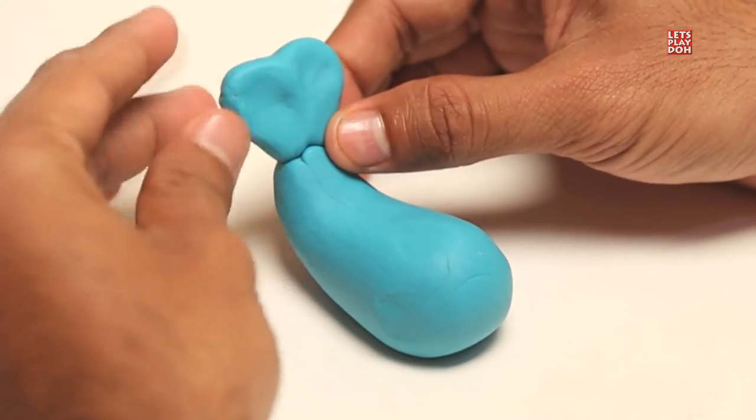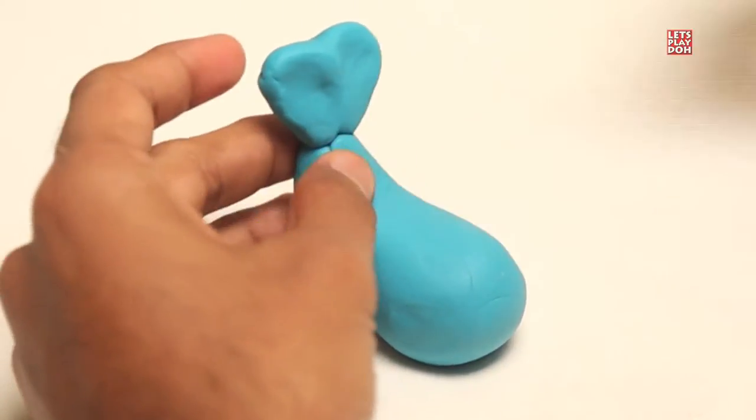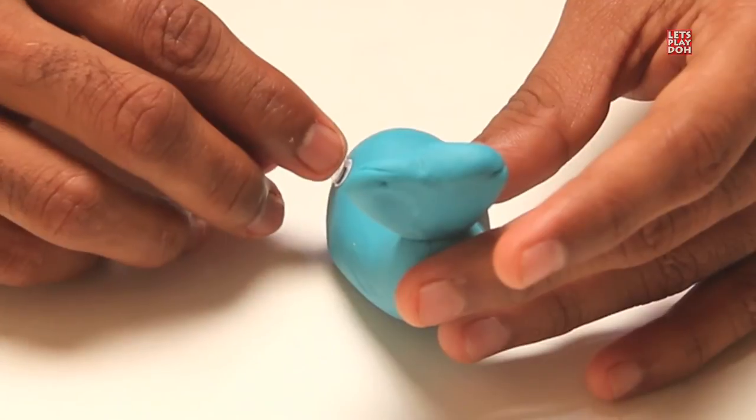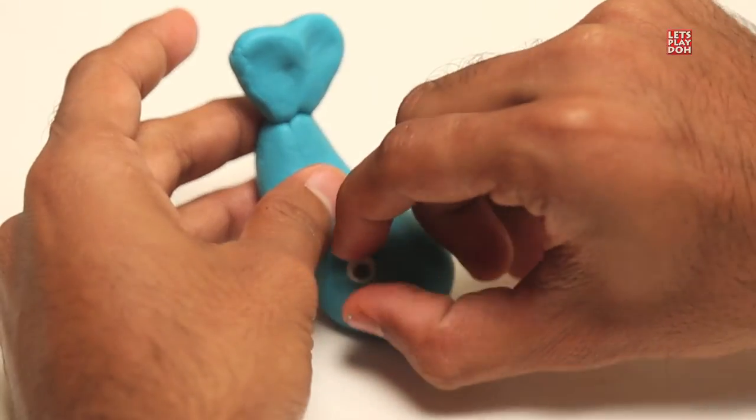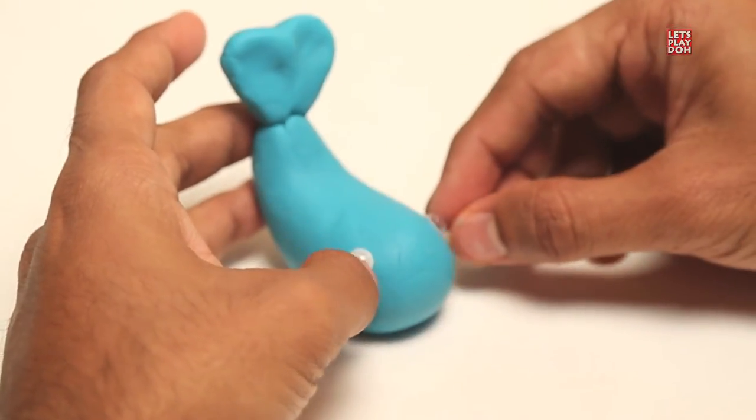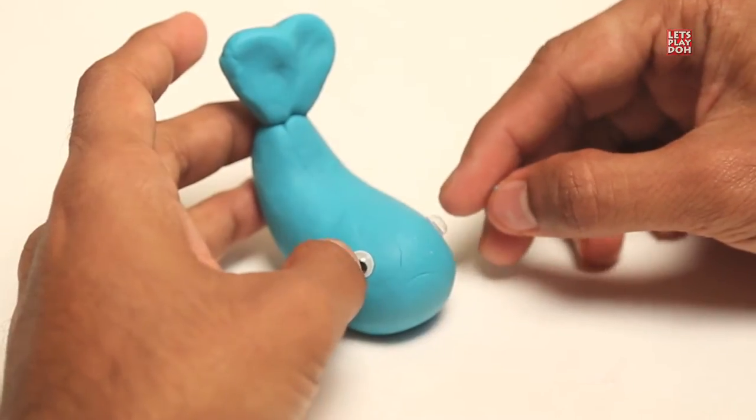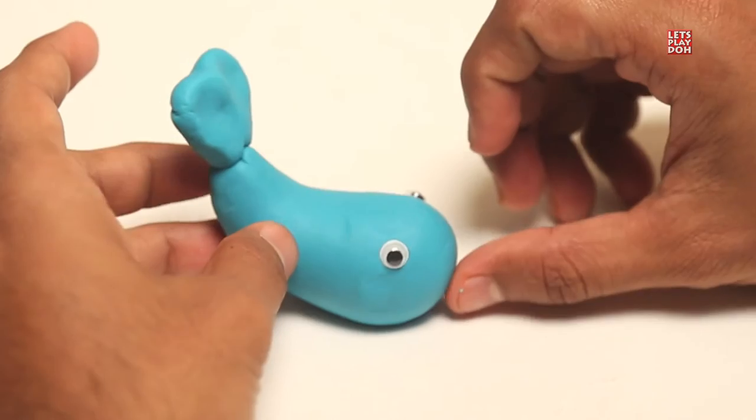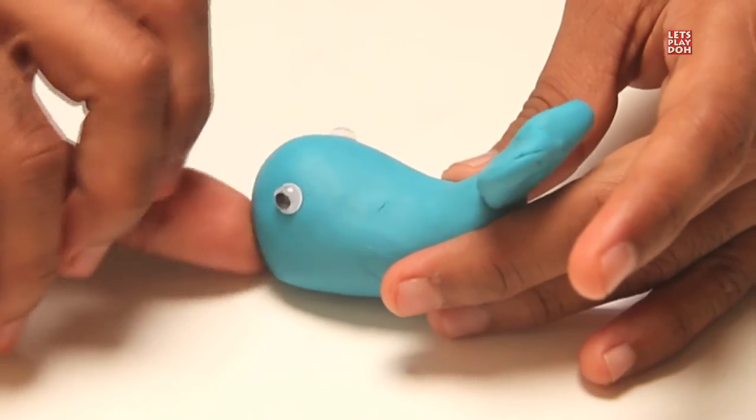Now just so that we know where the head is, let's take our googly eyes. This is a very big head. It's a very big face on our whale. So we're going to put the googly eyes on either side, and a good amount of space between them. They should be even, but pretty far apart. That makes it look really cute.